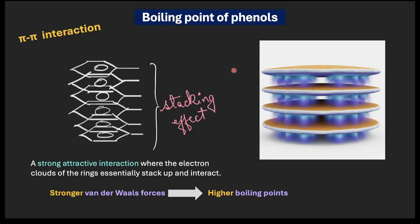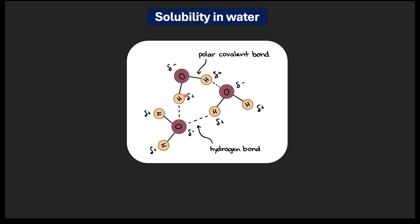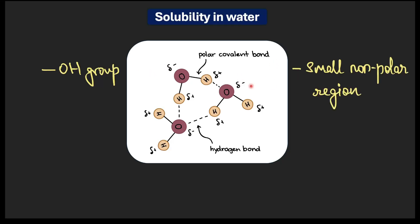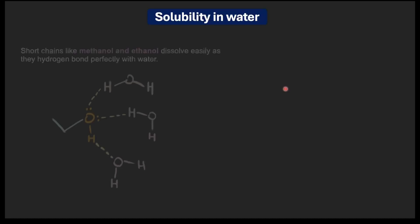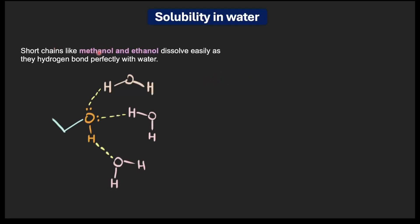Now let's look at solubility. Water loves to form hydrogen bonds, so if a molecule has an OH group and a small enough non-polar region, water will welcome it readily. Short-chain alcohols like methanol and ethanol dissolve easily in water because they can form hydrogen bonds with it. However, as the alkyl chain gets longer, the molecule becomes more and more hydrophobic, and alcohols with a larger alkyl chain find it increasingly difficult to dissolve in water.